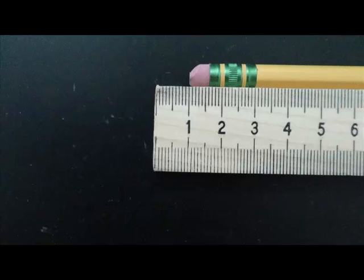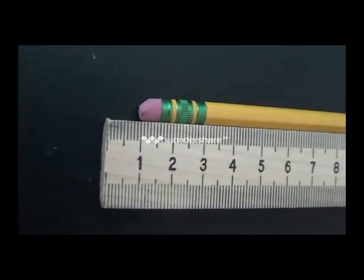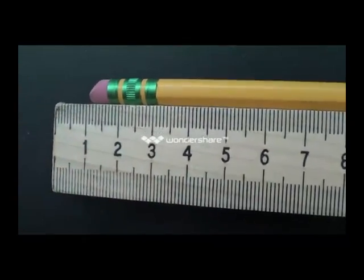Also, whenever making measurements with a meter stick, always ensure you are looking straight down at it—not from an angle, not from the side, but always straight down. Notice how you get different measurements on the pencil as we change the angle from which we view the meter stick.